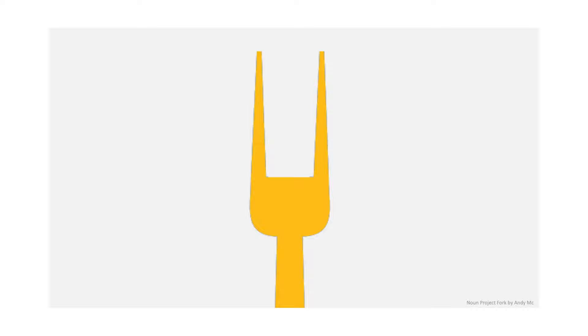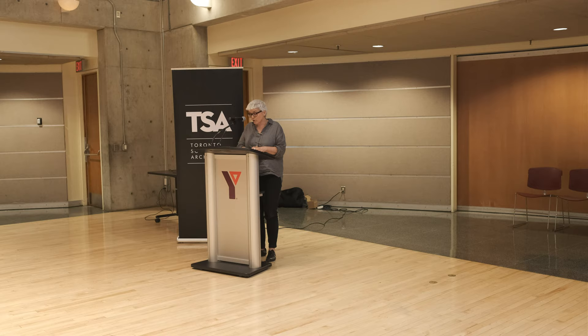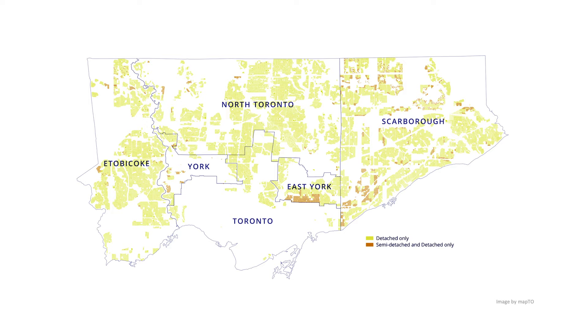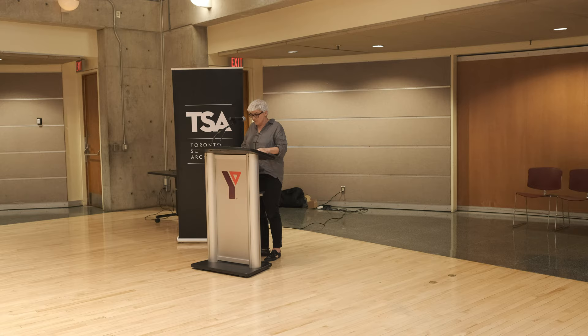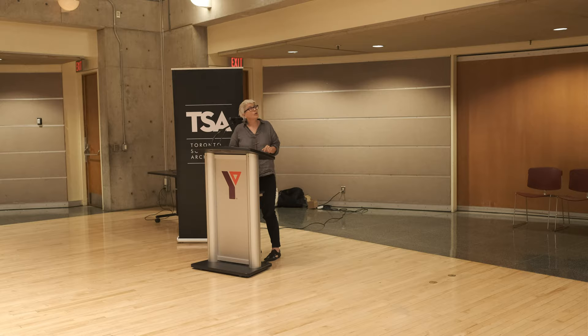This sort of incremental small-scale development provides a diversity of housing options. What we've ended up with is a fork that is really difficult to eat with. The yellow belt in Toronto represents about 200 square kilometres — twice the size of Manhattan — defined in the city zoning by-law as the residential detached zone, where what's allowed to be built is a detached house. Anything else requires a variance and adds cost, time, and possibly intense neighbourhood pushback.